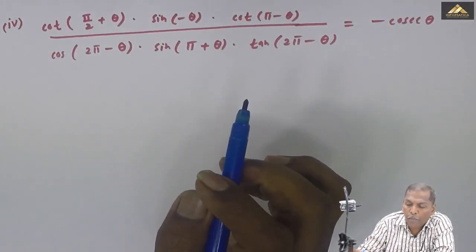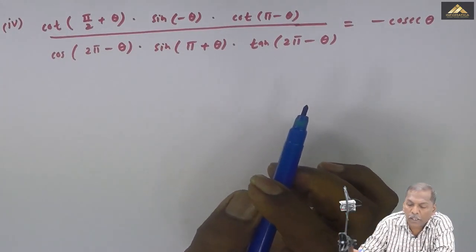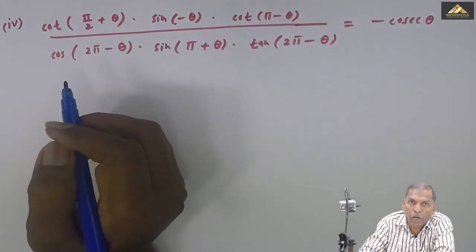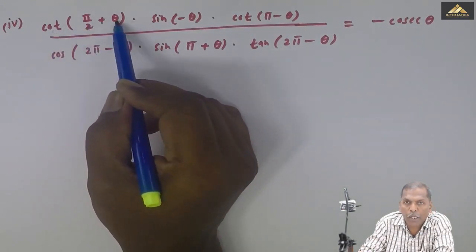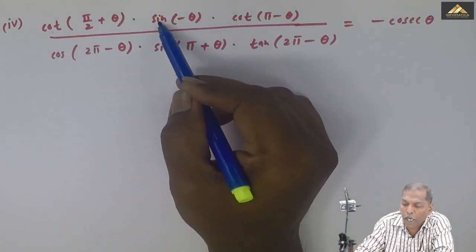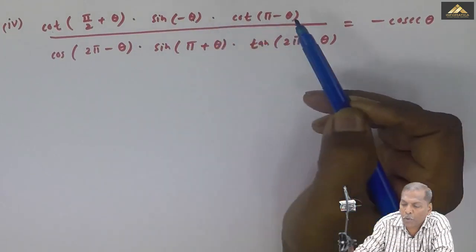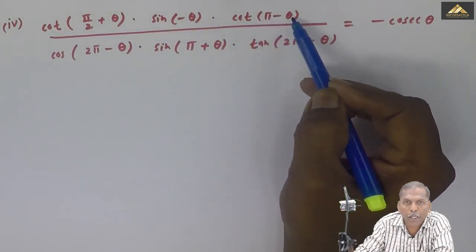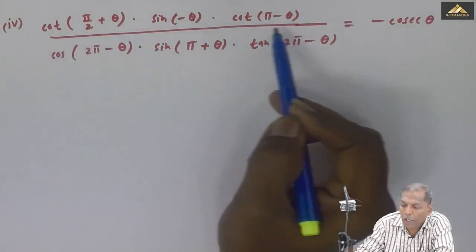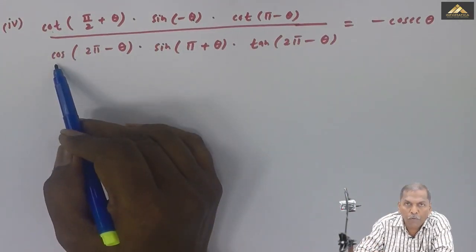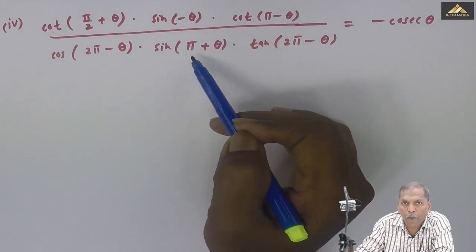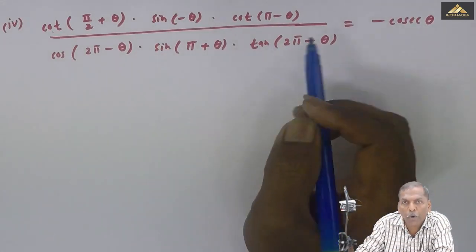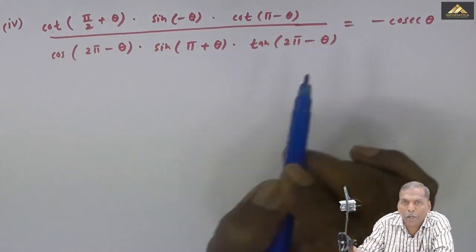Now let's start from left hand side. So LHS is equal to cot bracket pi by 2 plus theta into sin of minus theta into cot of pi minus theta, totally divided by cos of 2 pi minus theta into sin of pi plus theta into tan of 2 pi minus theta.